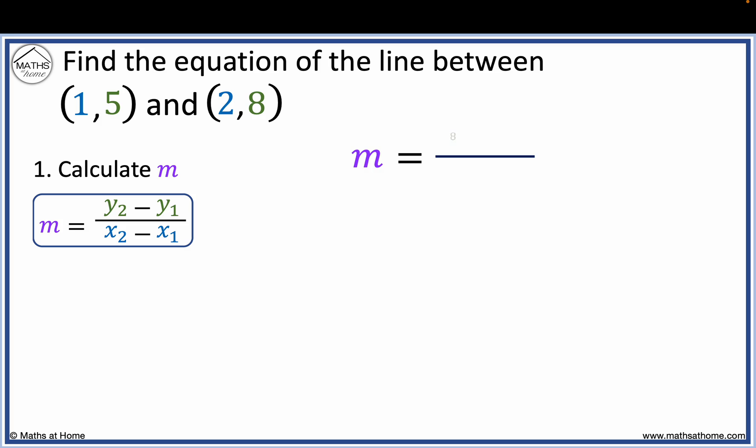Here y2 equals 8, y1 equals 5, x2 equals 2 and x1 equals 1. We work this out so that 8 minus 5 equals 3, 2 minus 1 equals 1, and then 3 divided by 1 equals 3.